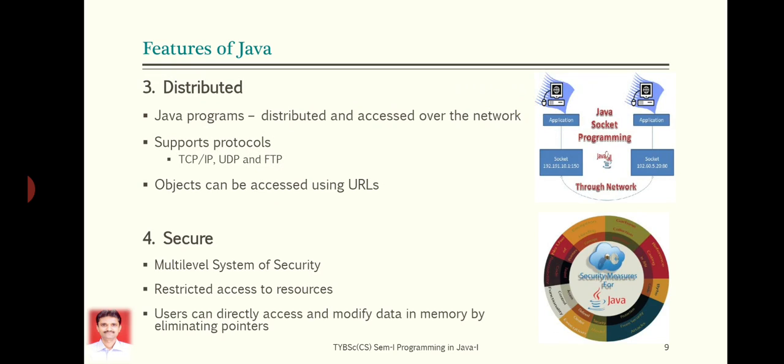Next feature of Java is distributed, means Java programs can be distributed and accessed over the network. So Java supports various networking protocols such as TCP/IP, UDP, file transfer protocol and others. Therefore, Java can be used to develop applications which can be used on network. So Java applications can access objects using URLs and also invoke remote methods using RMI.